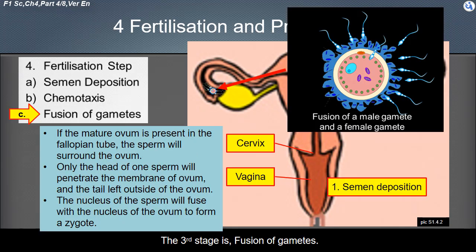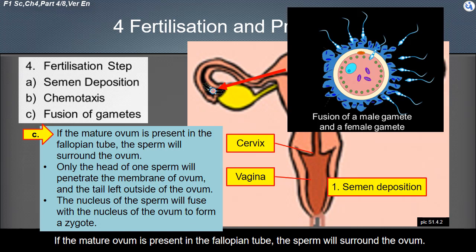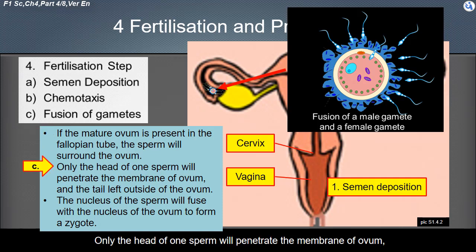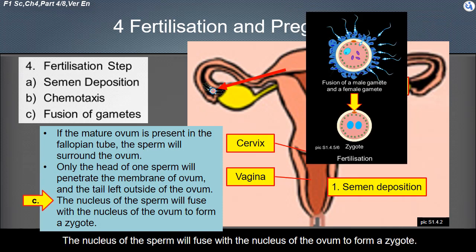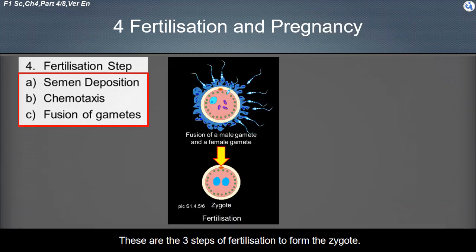The third stage is fusion of gametes. If the mature ovum is present in the fallopian tube, the sperm will surround the ovum. Only the head of one sperm will penetrate the membrane of the ovum, and the tail is left outside. The nucleus of the sperm will fuse with the nucleus of the ovum to form a zygote.